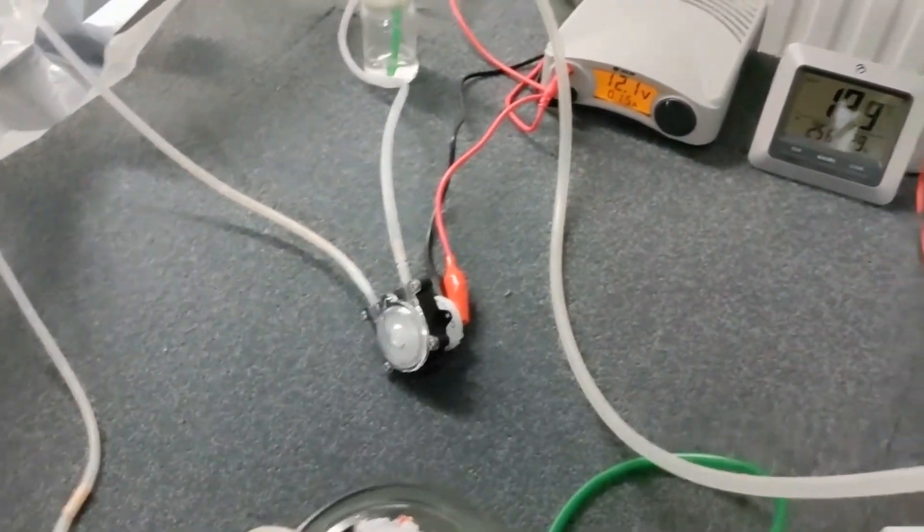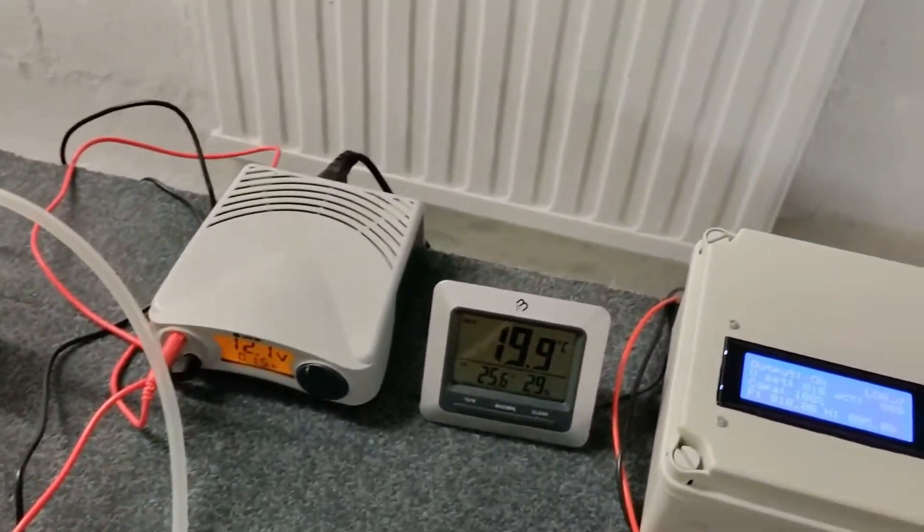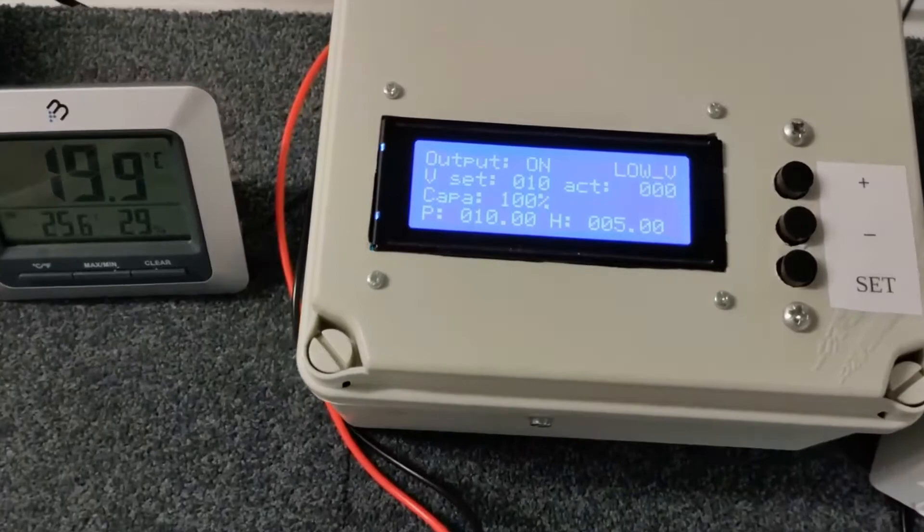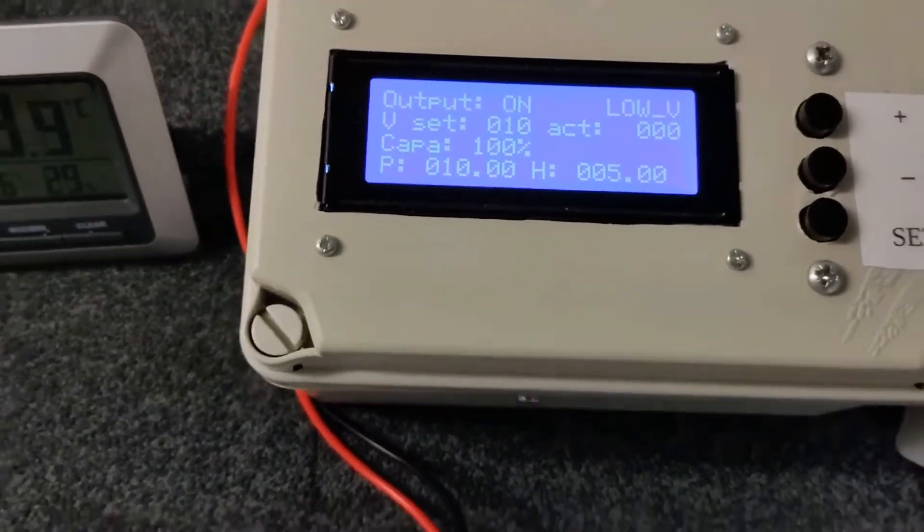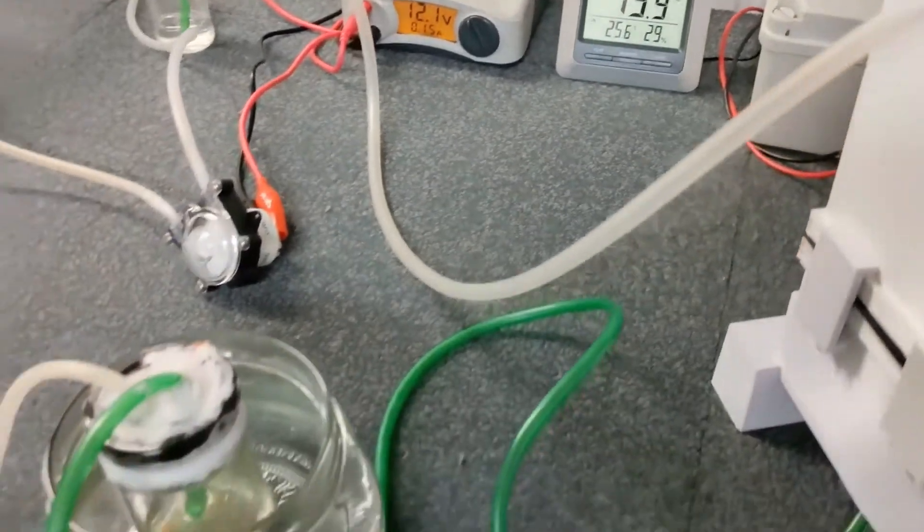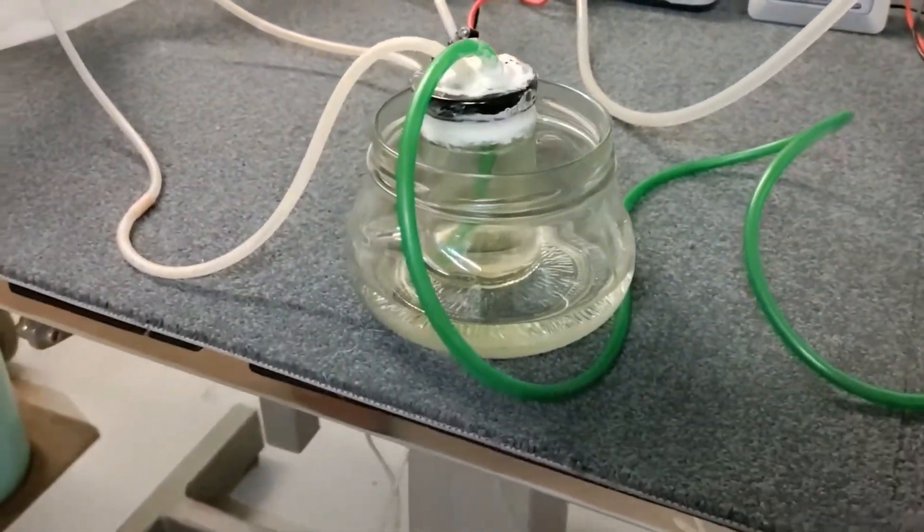The fourth part of the system is the electric circuit that provides the correct voltage and current that is tailored designed for Serrano's reactor. The last part of the system is the product collection device, which is the cooled condenser.